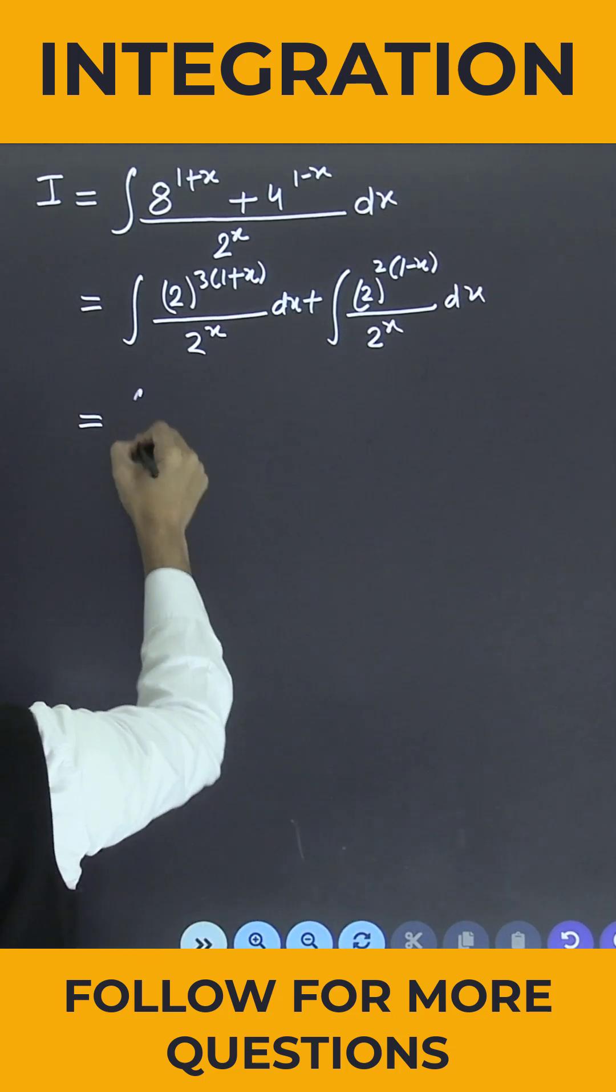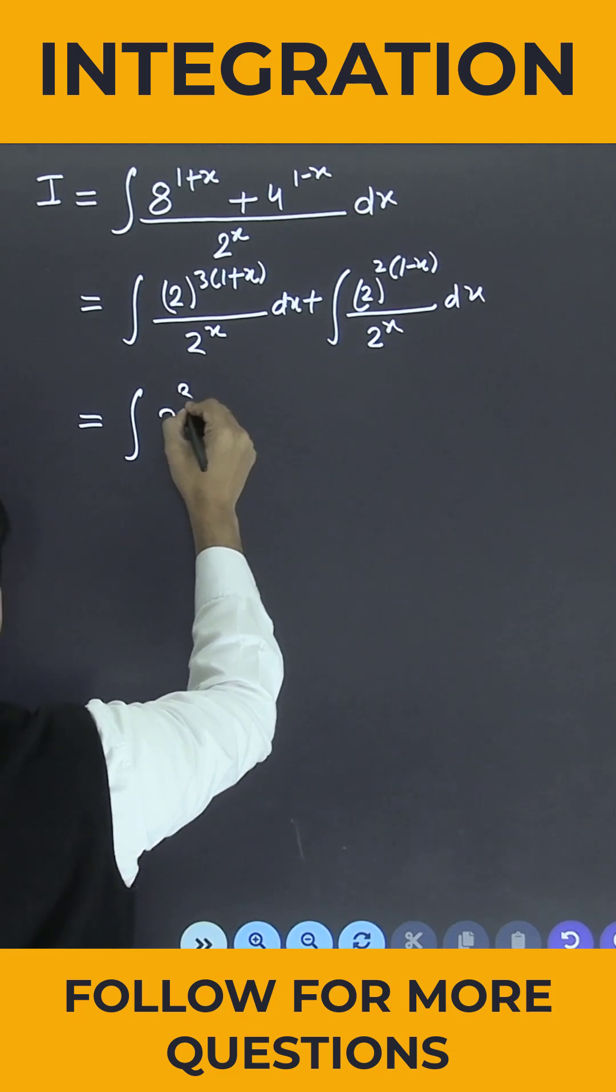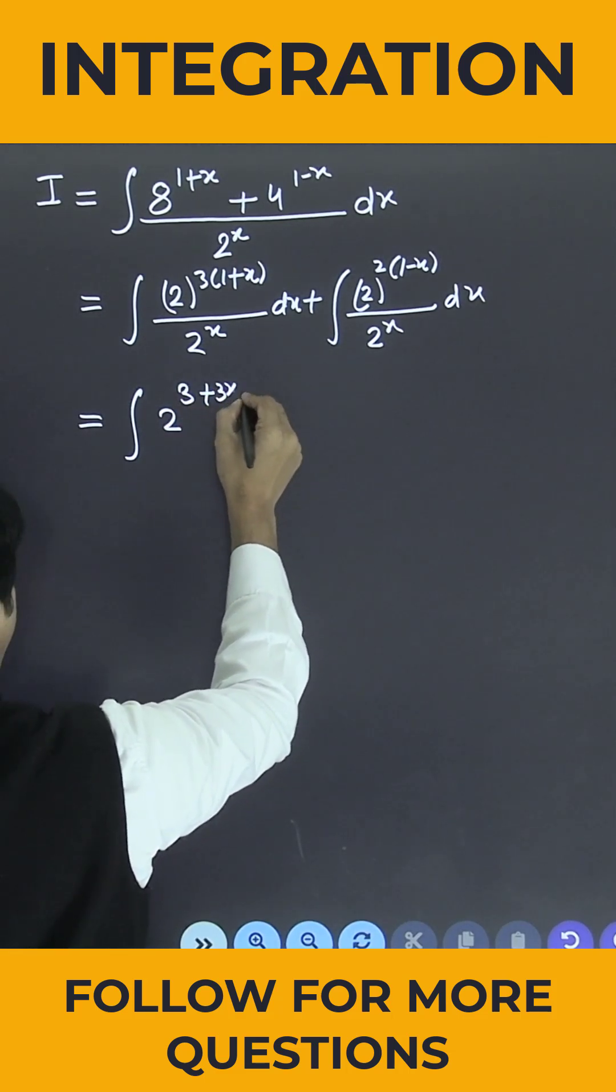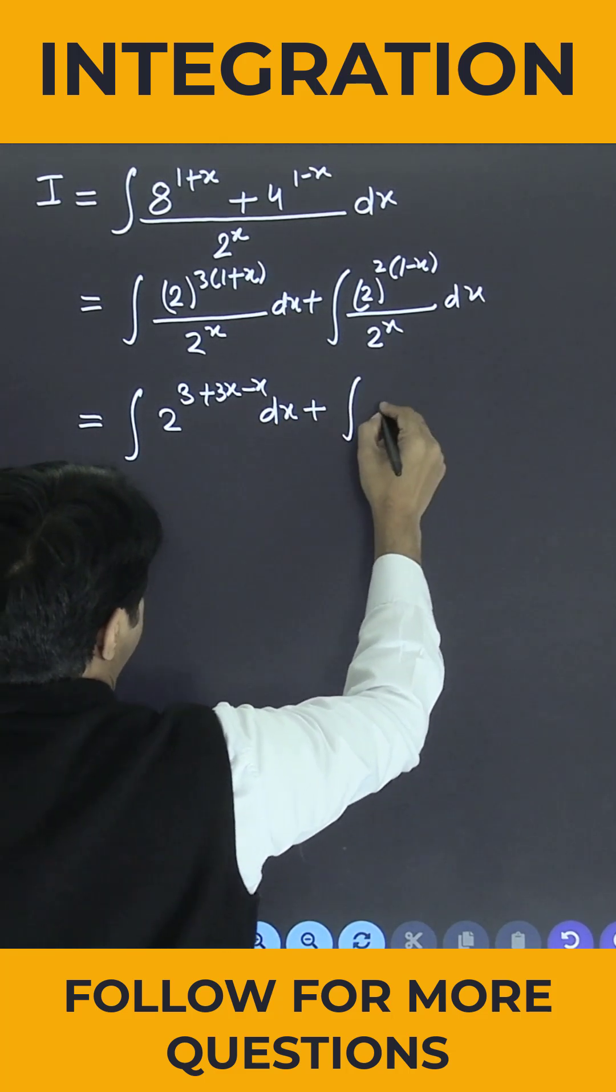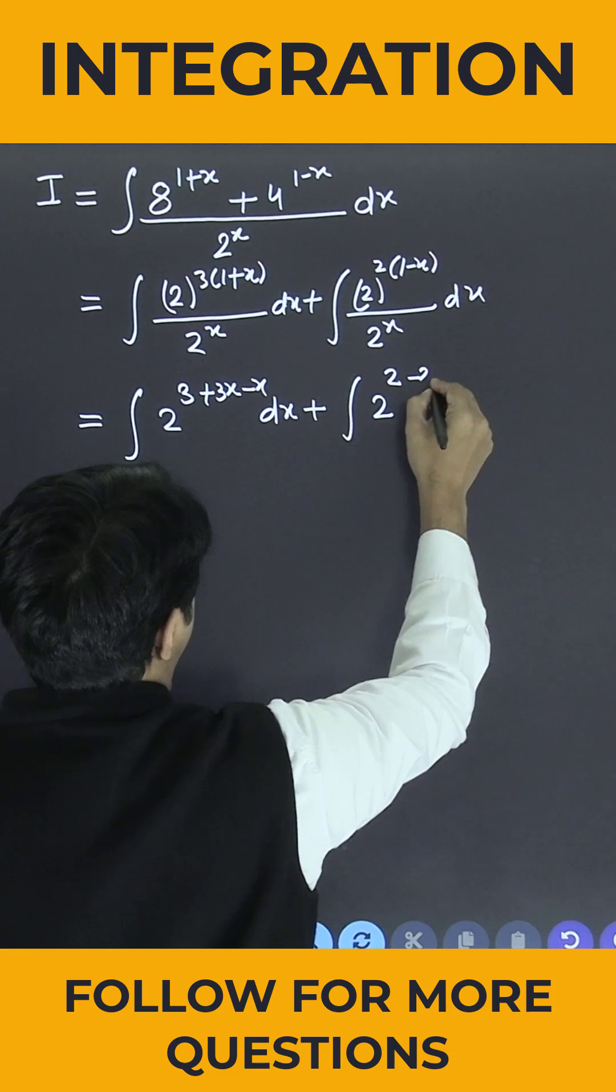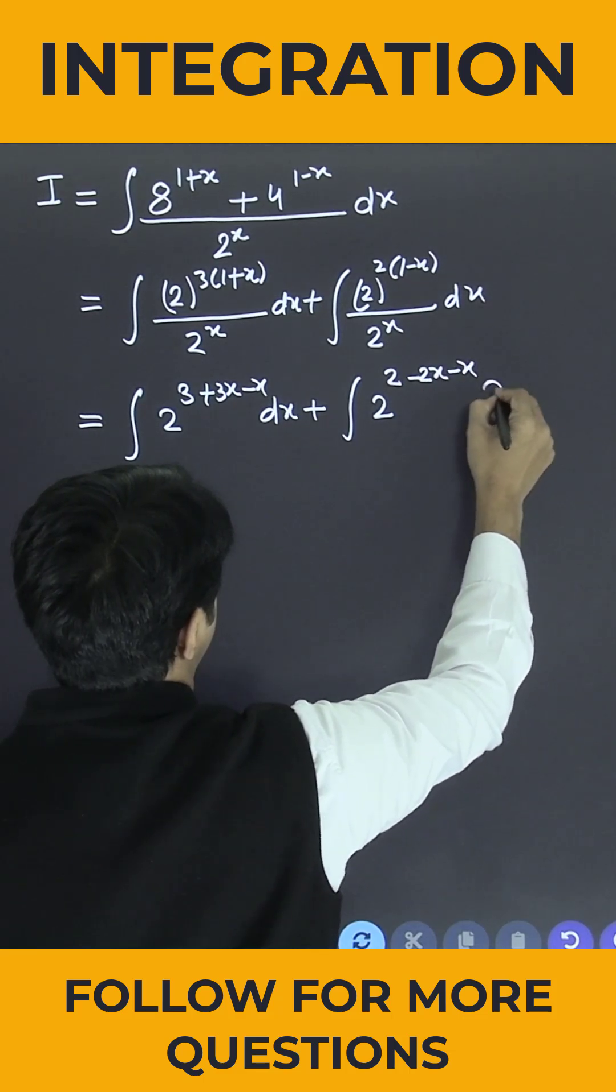So this is nothing but the integral of 2 to the power 3 plus 3x minus x, dx, plus the integral of 2 to the power 2 minus 2x minus x, dx.